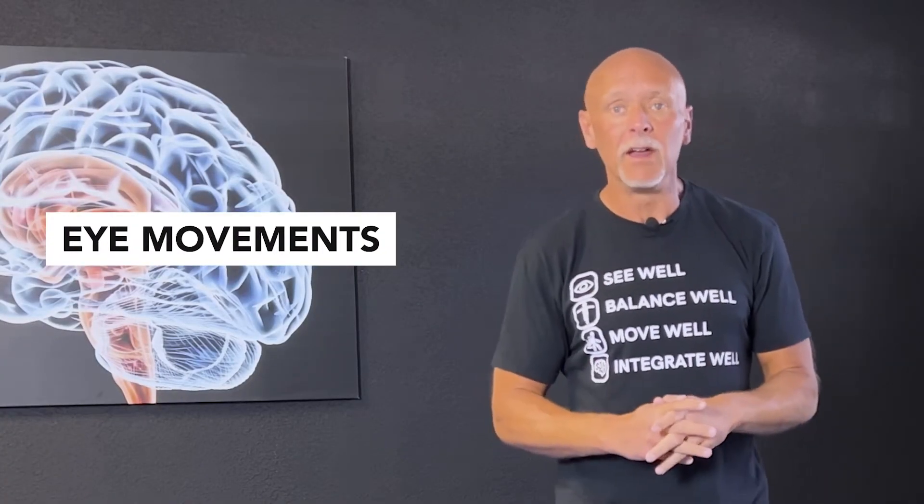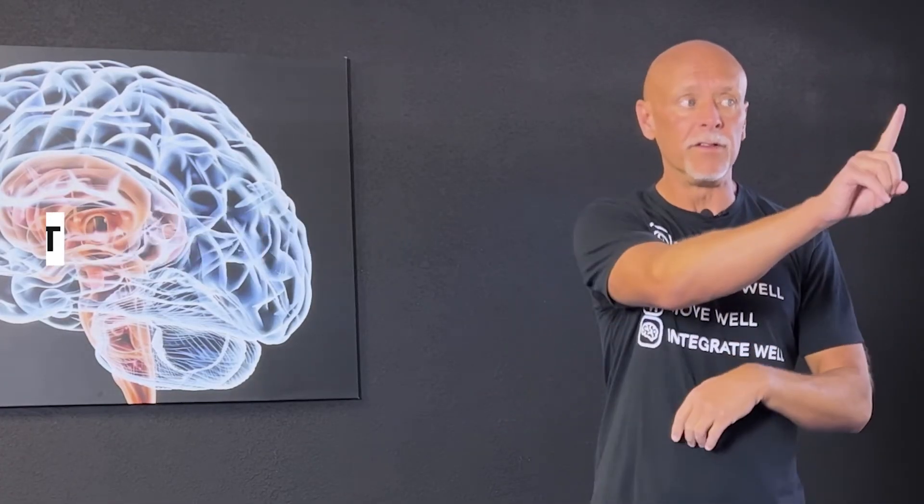From there, we then need to start talking about eye movements. Whenever we talk about eye movements, there are a couple of critical ones with regards to balance. The first one is called a smooth pursuit. If you can imagine that there is a very slow fly moving across in front of my eyes and I am following that, that is called a smooth pursuit.